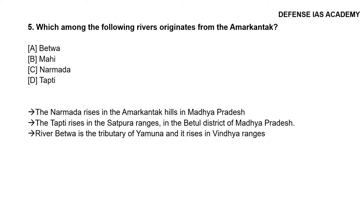Question 5: Which among the following rivers originates from the Amarkantak? The correct answer is option C, Narmada. Narmada rises in the Amarkantak hills in Madhya Pradesh. The Tapti rises in the Satpura ranges in the Betul district of Madhya Pradesh, and the river Betwa is a tributary of Yamuna and rises in the Vindhya ranges.